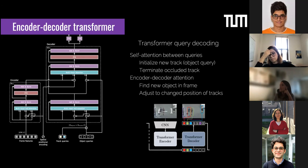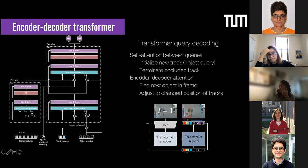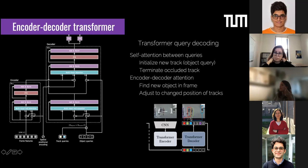The second important ingredient is encoder-decoder attention, which allows looking at image evidence. This is crucial for finding new objects in the frame, but also for adjusting bounding box positions. A track query has an implicit position encoded — similar to DETR queries — but if it looks at image evidence and sees the person has moved, it has the necessary information to shift the box to where the pedestrian now is.